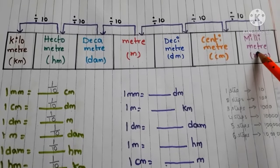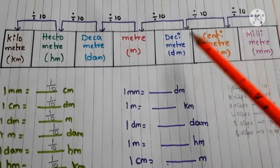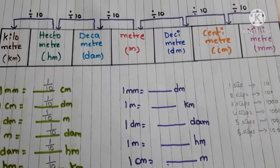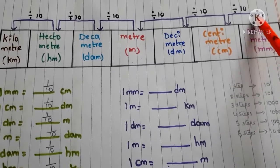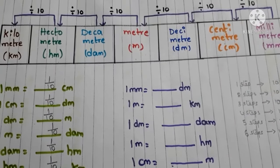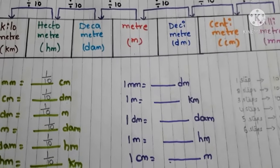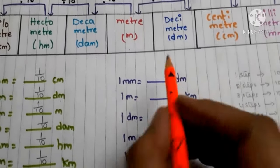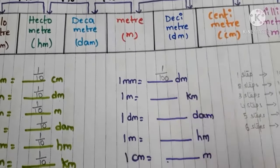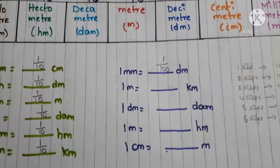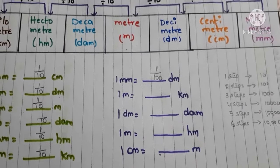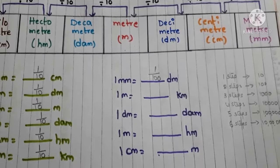Now: 1 millimeter equals how many decimeters? Find millimeter in the table, then find decimeter. Count the steps: one, two — two steps. So we divide by 100. Therefore, 1 millimeter equals 1/100 decimeters.